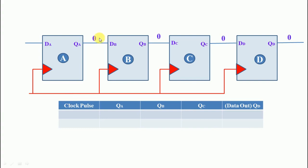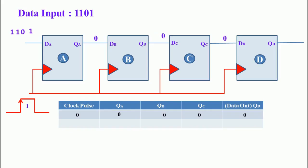Initially all flip-flop outputs become zero because no data is available. Here our data input is 1 1 0 1. We are using a positive-edge clock signal. The least significant bit is entered first. Now we are going to apply the first clock pulse. Using D flip-flops, when the clock pulse is applied, the input data is shifted to the output.